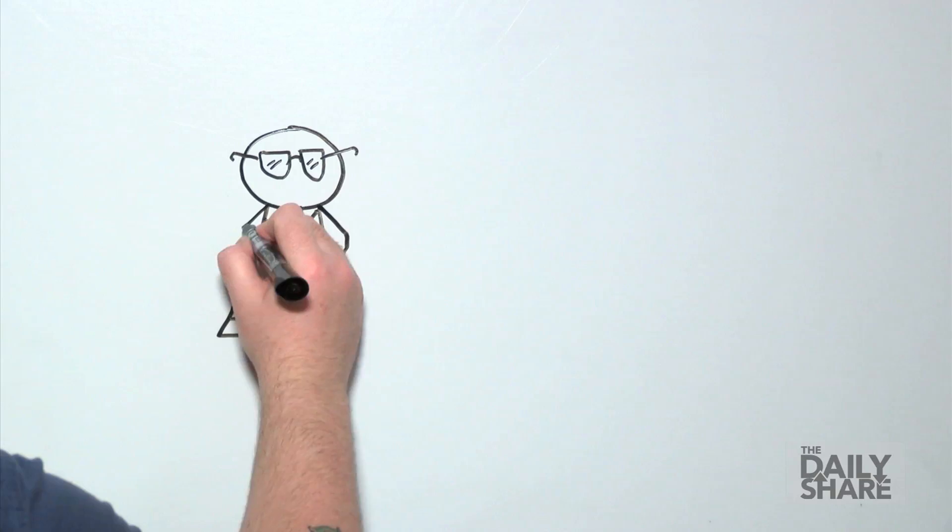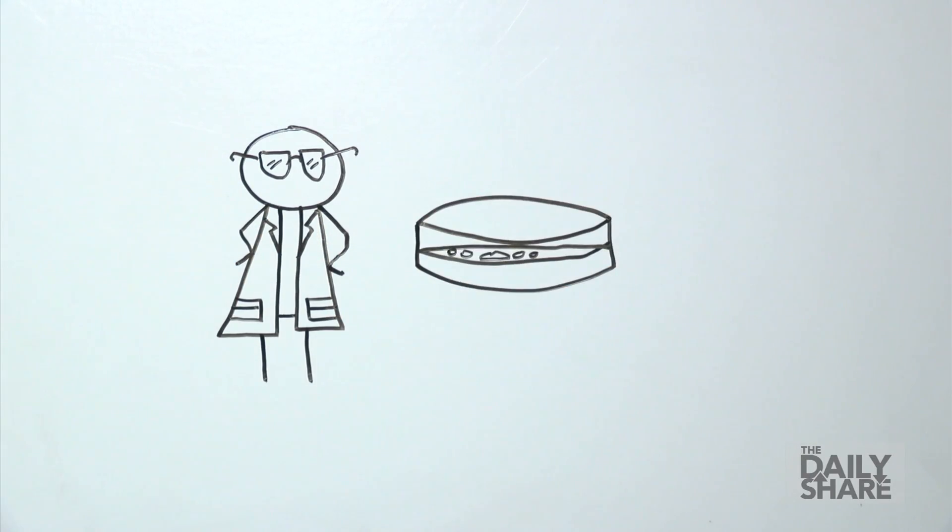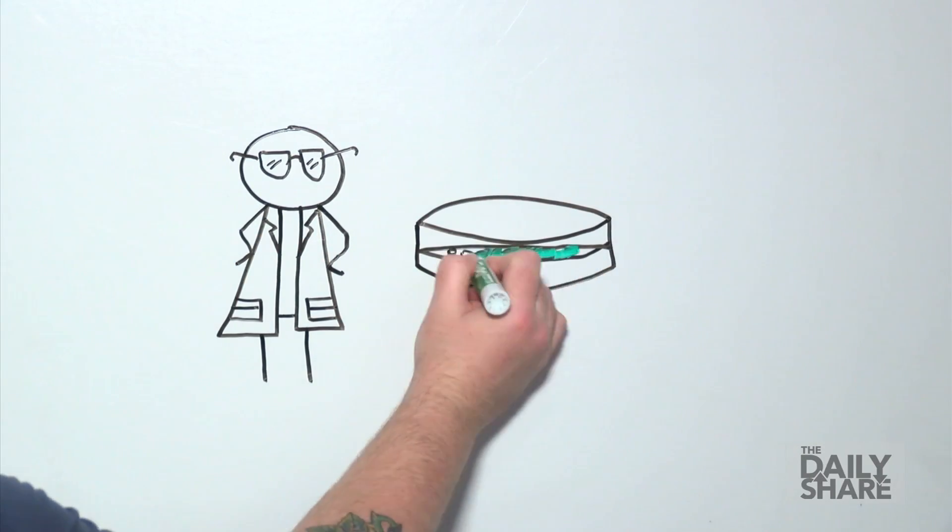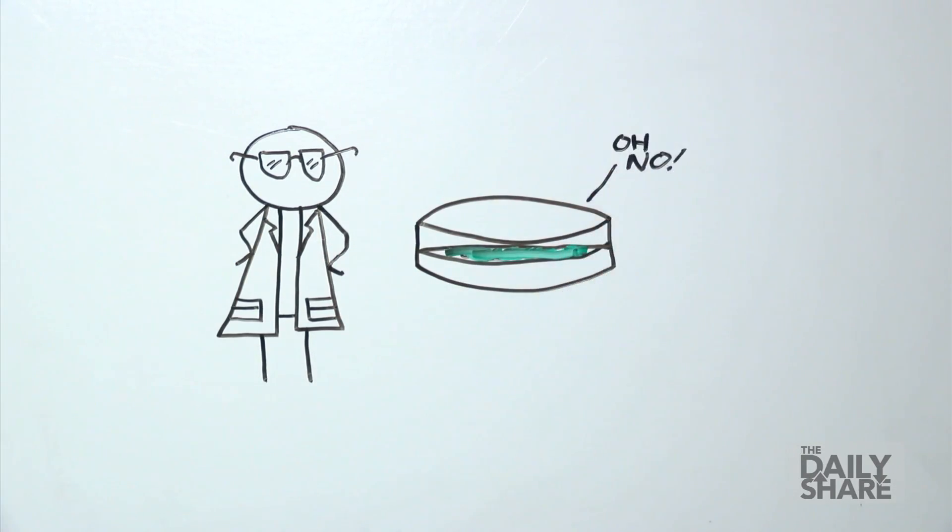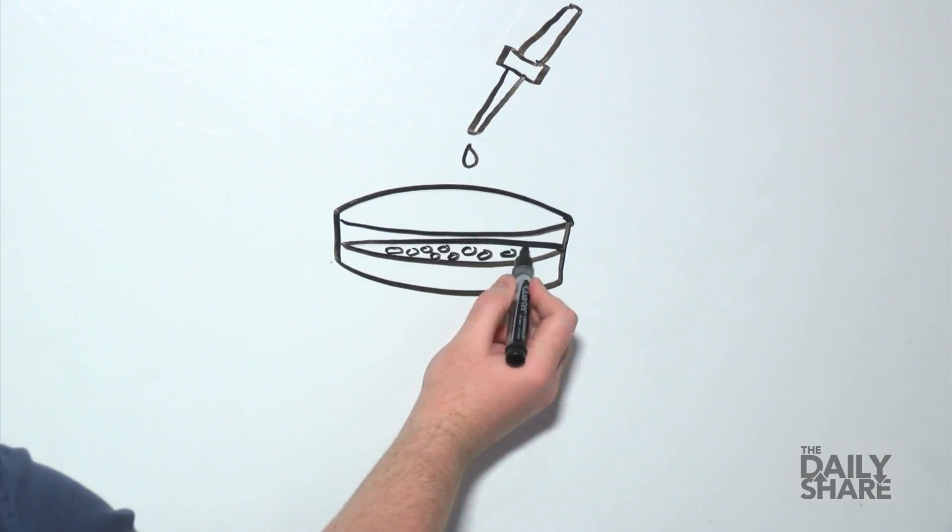It was discovered by accident when Sir Alexander Fleming left a plate of Staphylococcus uncovered and later found that a mold had grown, killing the bacteria, which is basically how we find antibiotics today.